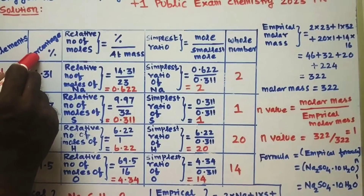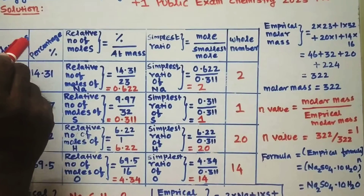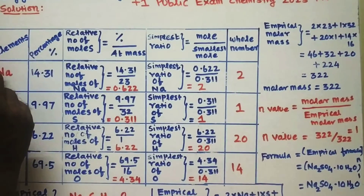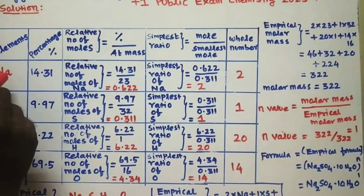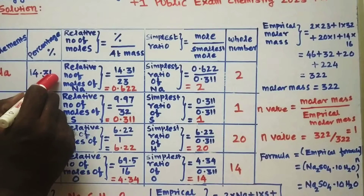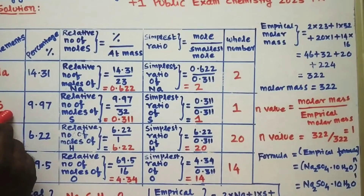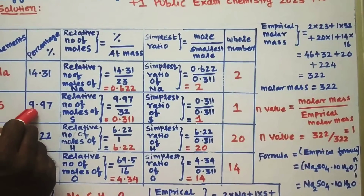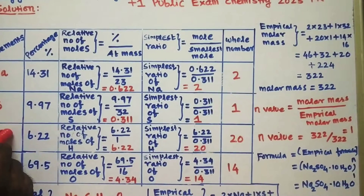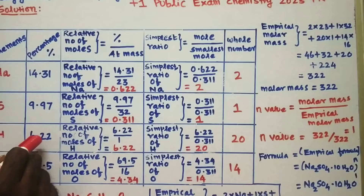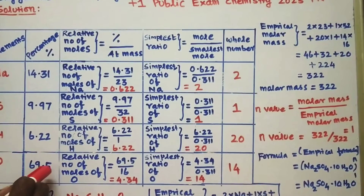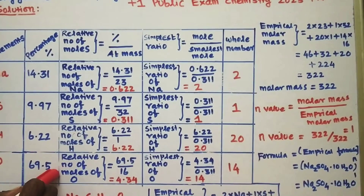In the second row, we write the percentage of the elements: sodium 14.31, sulfur 9.97, hydrogen 6.22, oxygen 69.5%.